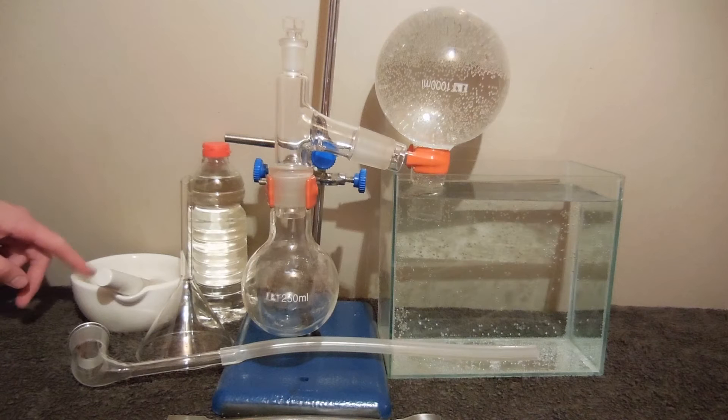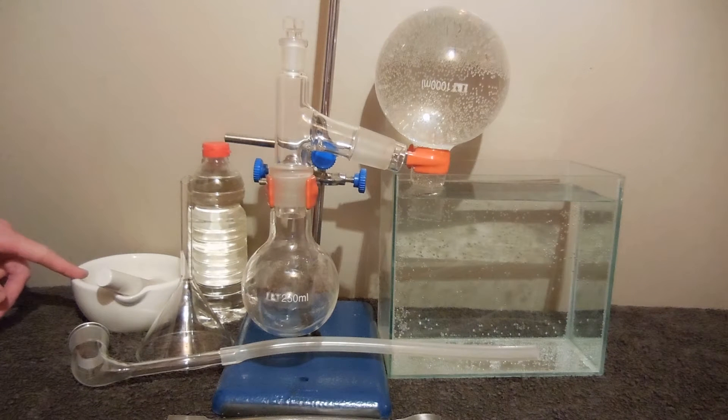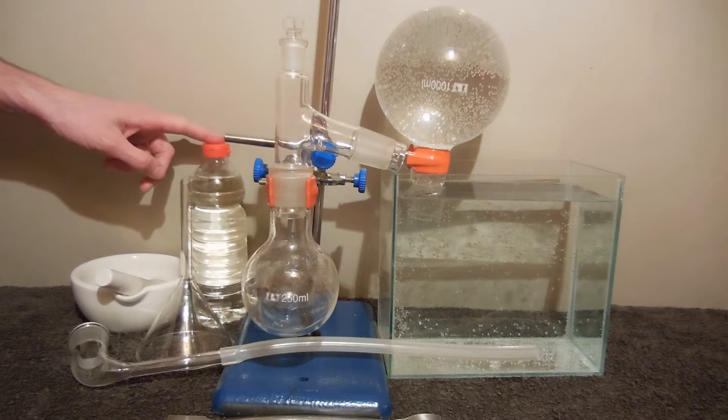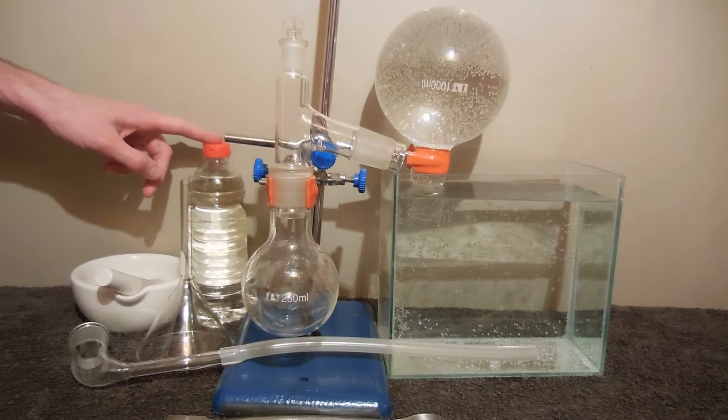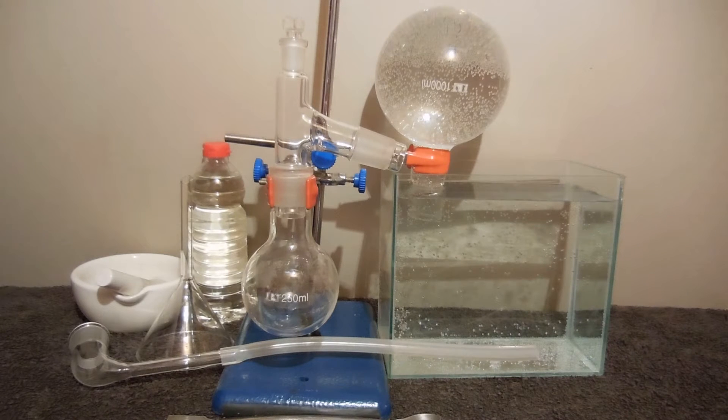I have here calcium carbonate rock, smashed to dust, and acetic acid 500ml, 10% by volume. I will put rock to the round bottom flask and add acetic acid.